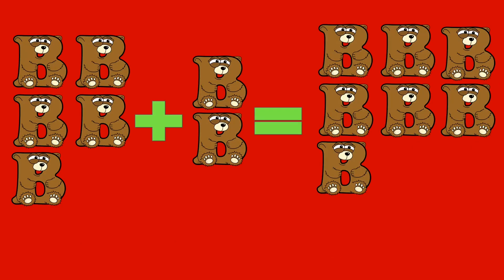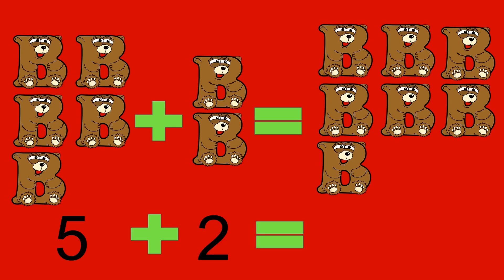5 bears plus 2 bears equals 7 bears. 5 plus 2 equals 7.